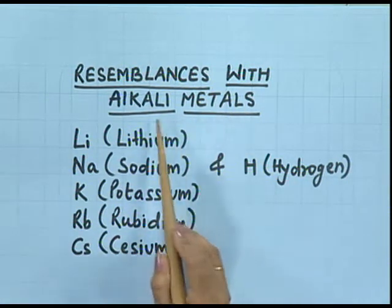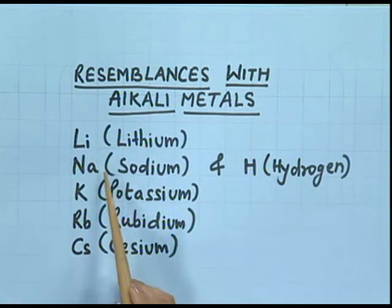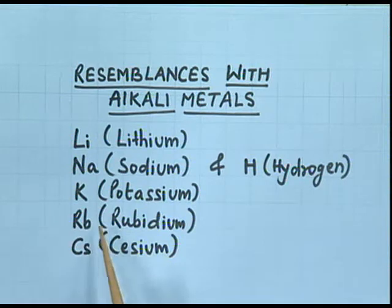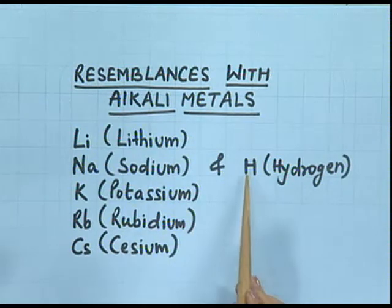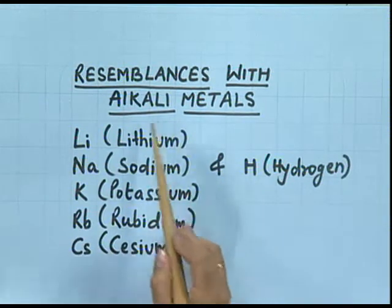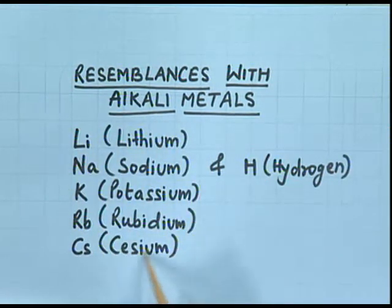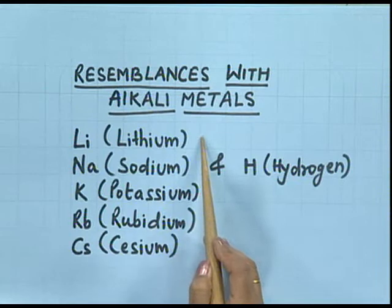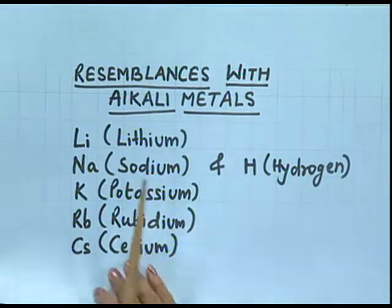Alkali metals are lithium, sodium, potassium, rubidium, caesium, and francium — francium is radioactive. We will discuss the resemblance of hydrogen with these alkali metals, that is the first group elements.